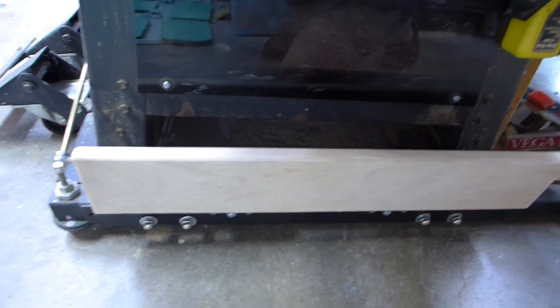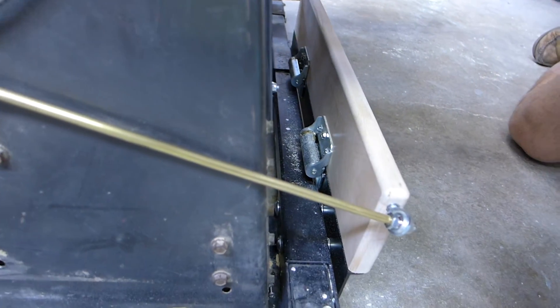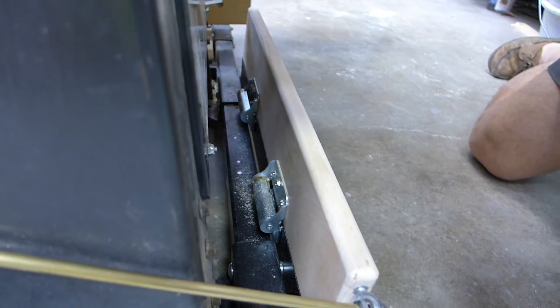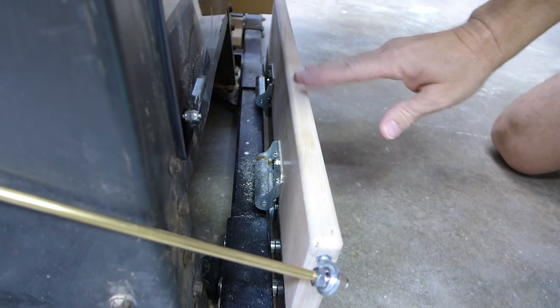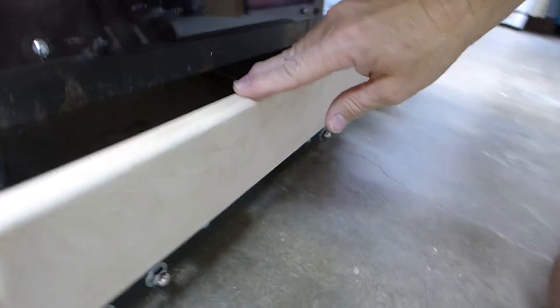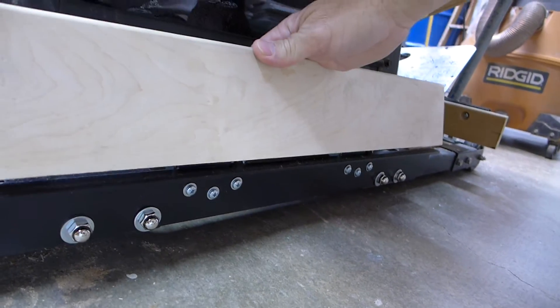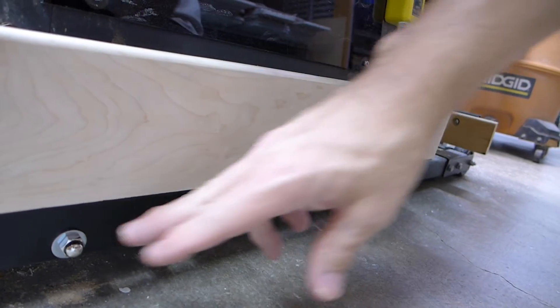So the wooden paddle itself has a couple of self returning springs in the back over here. These are standard door springs and they'll just return all the way themselves and those attach down to a piece of aluminum angle down below that conveniently attaches to my saw base.